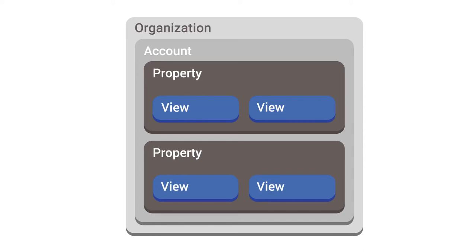Each property can collect data independently of each other using a unique tracking ID that appears in your tracking code. You can use a feature called filters in your configuration settings to determine what data you want to include in the reports for each view.